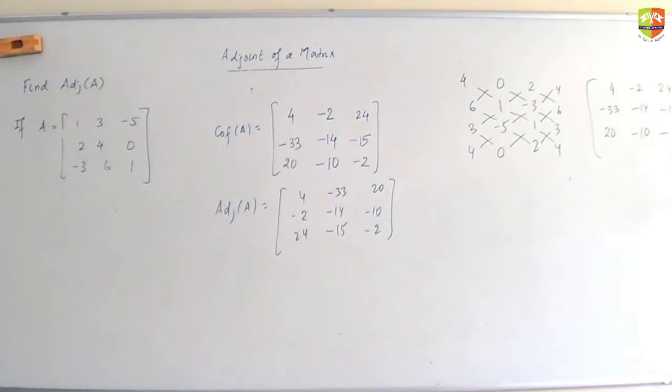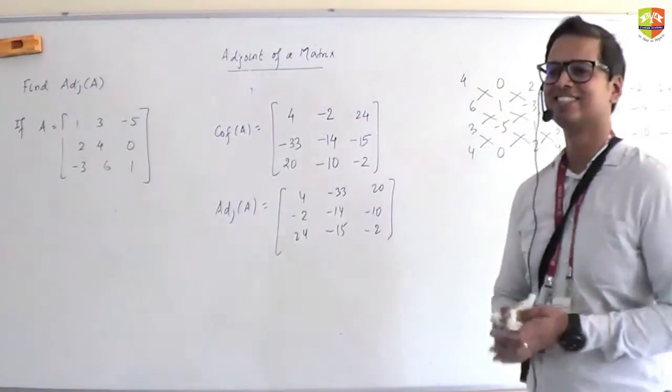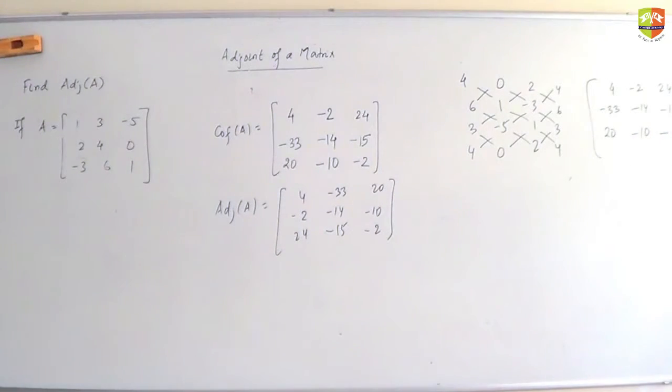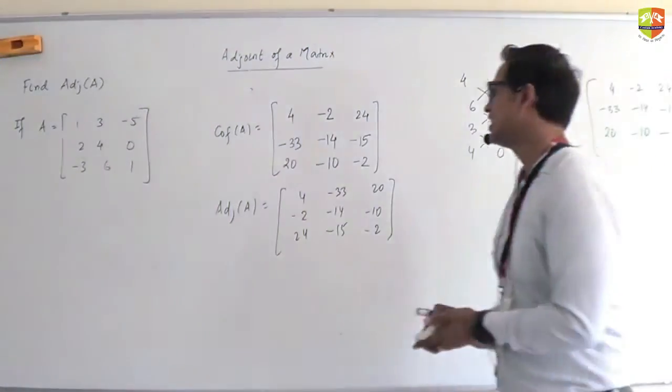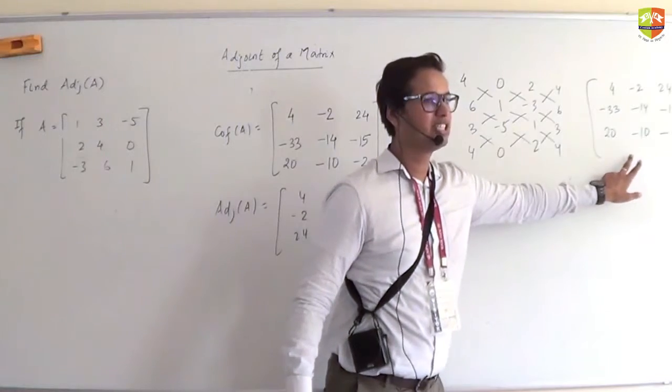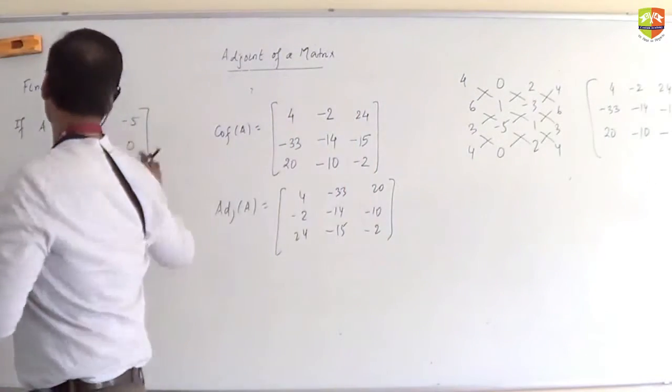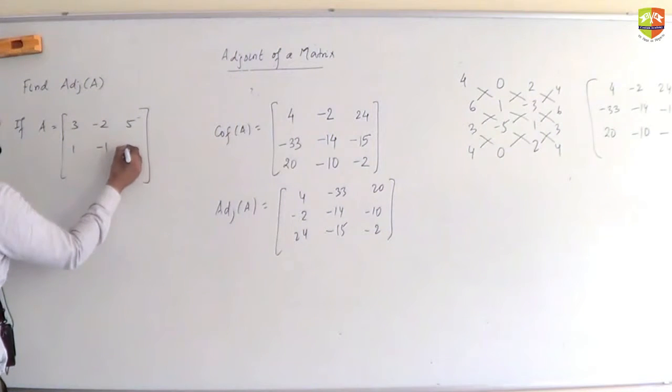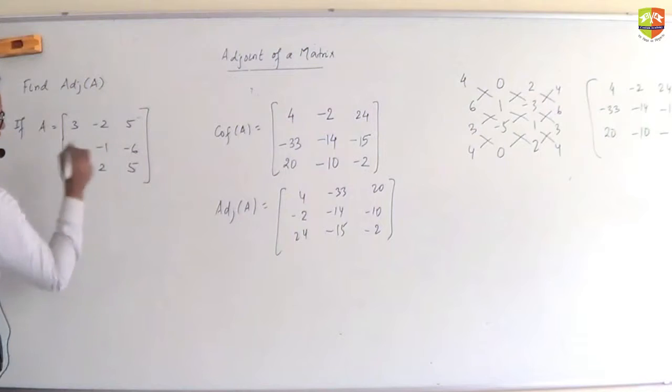So, 4 minus 0 will be 4. 0 minus -6 will be 6. Actually let me recalculate carefully: going through the cross multiplications systematically: 4 times 1 minus 0 times 6 equals 4. Then 1 times 0 minus -6 times -5 equals 0 minus 30 equals -30... Let me just complete this properly: you get the cofactor matrix directly by doing cross multiplication on this extended array. Your cofactor is ready with you. No need to do those plus minus plus minus.